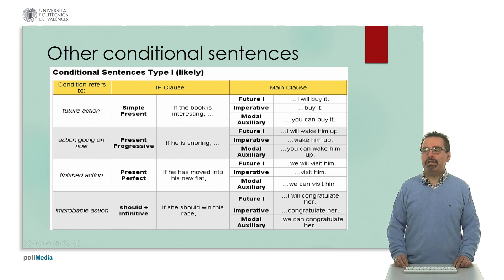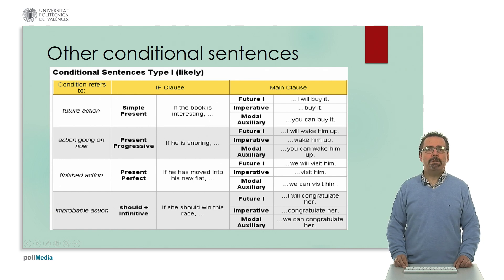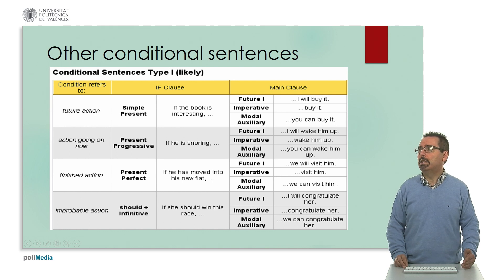It can also refer to a finished action — in this case we use present perfect: 'If he has moved into his new flat, we will visit him' or 'visit him' or 'we can visit him.' Or to an improbable action — in this case we use 'should': 'If she should win this race, I will congratulate her' or 'congratulate her' or 'we can congratulate her.' As we can see, we can play with different possibilities in the main clause, using even modal auxiliaries depending on the meaning.